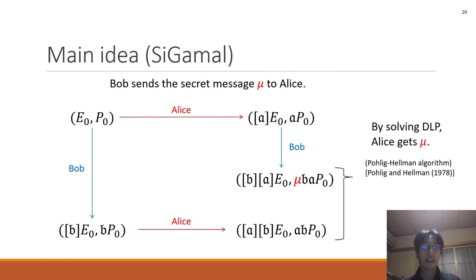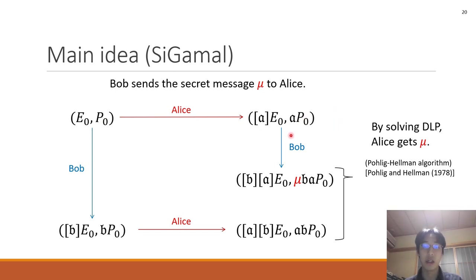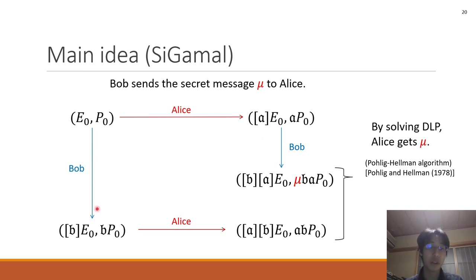Next, I explain the main idea of C-GAMMA. Bob sends the secret message μ to Alice. First, Alice computes this group action and she gets R*E0 and R*P0. And let these two values be the public key. And Bob will compute these two group actions.